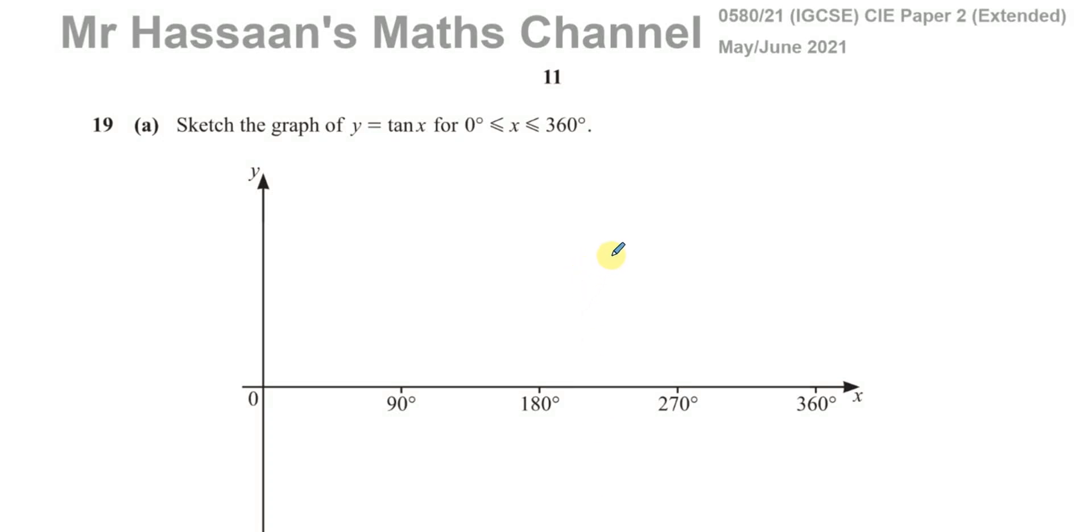Okay, welcome back. This is Mr. Hassan's Maths Channel and this is question number 19 from the May-June 2021 IGCSE Cambridge paper 2 variant 1 from the 0580 extended syllabus. This question is about trigonometry and trig graphs, something which has got more of a focus in this new syllabus since 2020.